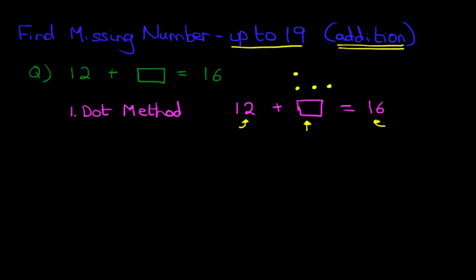Now how many dots have we drawn? Well let's count them. We've got 1, 2, 3, 4. The answer is 4. 12 plus 4 equals 16.